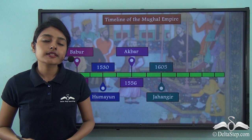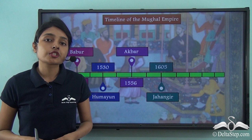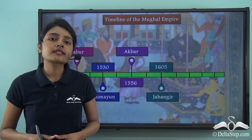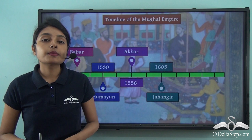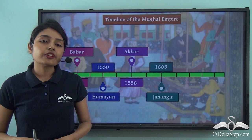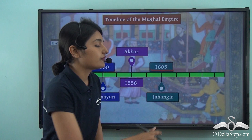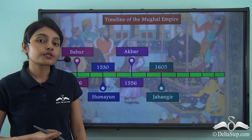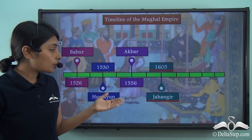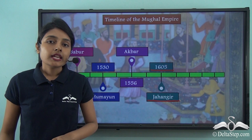In our last lesson we learned that towards the last years of Akbar's reign, he was faced with strong opposition and rebellion from his son Prince Muhammad Salim, who was desperate to become the Mughal Emperor. Akbar died of dysentery in 1605, paving the way for Prince Muhammad Salim to ascend the throne. He then assumed the title Jahangir, becoming the fourth Mughal Emperor in 1605.